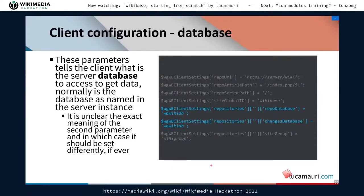This is the configuration of the database of the repository — you are telling the client what the repository database is. Normally it is simply the short name of the Wikibase installation, as configured in the local settings on the server part. Note that this is a client setting, but the options are called 'repo', so you are telling the client what data the repository has.